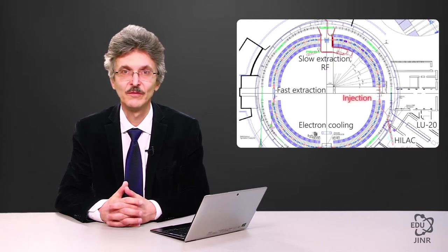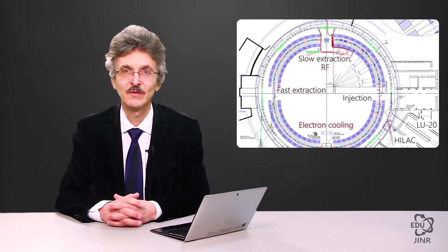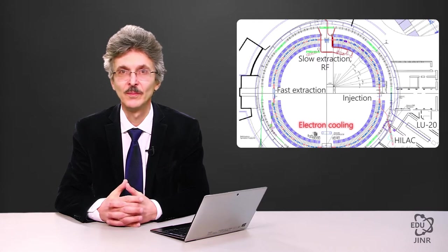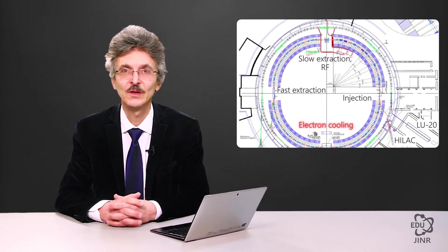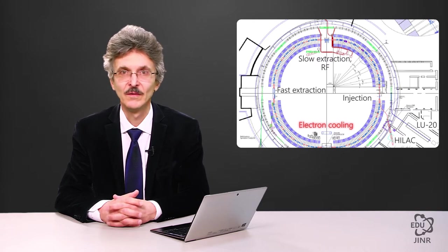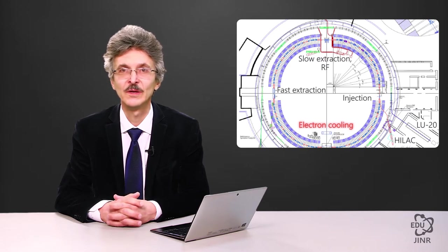These straight sections are used to accommodate the beam injection devices, RF stations for beam acceleration, beam extraction devices, and an electron cooling system. The electron cooling system is designed to provide an ion accumulation mode at the injection energy level and to cool the beam at an intermediate energy level to form the necessary parameters for further effective acceleration. The electron cooling system was created at the Budker Institute for Nuclear Physics, has been constructed at the required location, successfully tested, and is ready for operation.